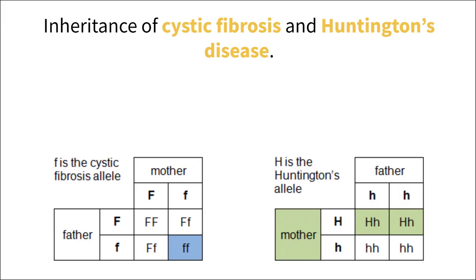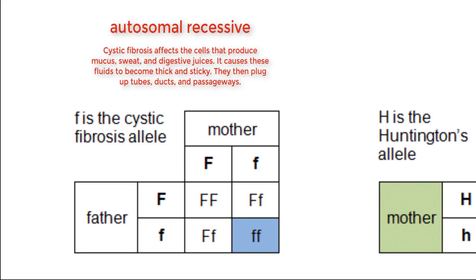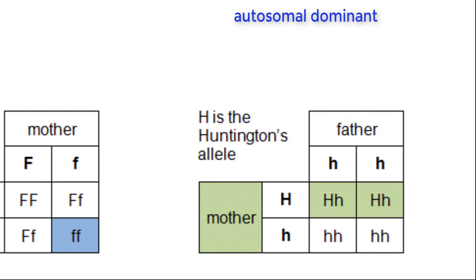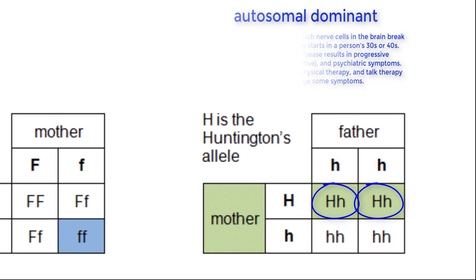Cystic fibrosis and Huntington's are two other examples of autosomal diseases. Cystic fibrosis is an autosomal recessive disorder caused by a mutation in a gene on chromosome 7. If someone has this mutation, they can develop thick and sticky mucus that lines their lungs, making it hard to breathe. Because it is recessive, the person needs both recessive alleles to express the diseased phenotype. Huntington's disease is an autosomal dominant disorder caused by a mutation in a gene on chromosome 4. This mutation alters the structure of the Huntington protein that supports brain activity, leading to neurodegeneration. Symptoms can include dementia and uncontrollable spastic movement, and a person only needs one mutated dominant allele to express the disease.